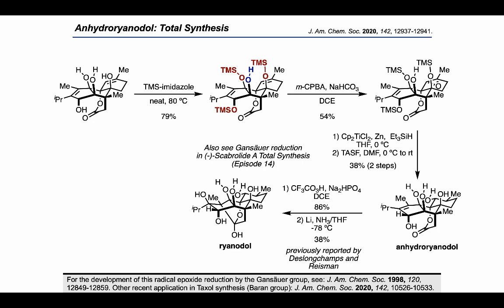Previous work from de Longchamp and Reisman has demonstrated that anhydroryanidol can be converted to ryanidol by epoxidation with trifluoroperacetic acid, followed by a reductive cyclization enabled by lithium and ammonia.